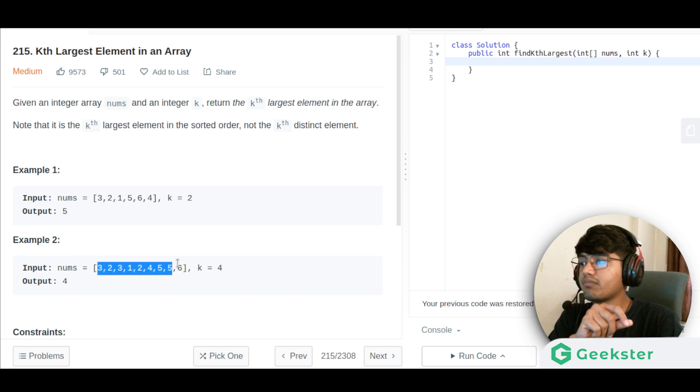You can see this example: 3, 2, 3, 1, 2, 4, 5, 5, 6, and k is 4. So the fourth largest element will be - 6 is the first largest element, second largest is 5, third is 5, fourth is 4. That's why it is written fourth here.